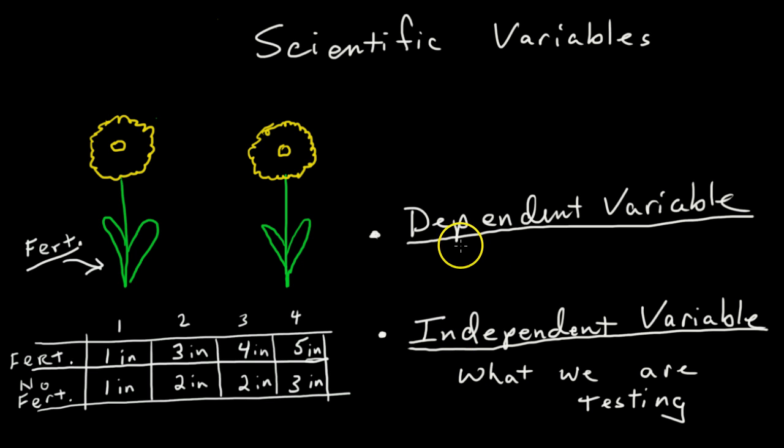So in this case, the dependent variable, what we are watching, would be the growth of the flower. So a definition for that would be what we measure. So the dependent variable is the factor that we are measuring, whether it's the growth of a flower, we're measuring something, we're timing something, we're watching for something to change color. It's what we are measuring, what we observe.